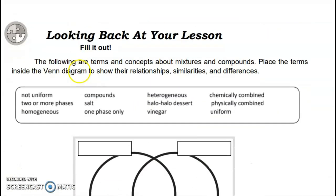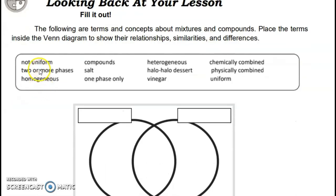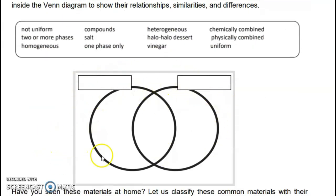Looking back at your lesson: fill in the following terms and concepts about mixtures and compounds. Place the terms inside the Venn diagram to show their relationships, similarities, and differences. You may place 'mixtures' on one side and 'compounds' on the other side of the Venn diagram, and arrange the remaining terms accordingly.